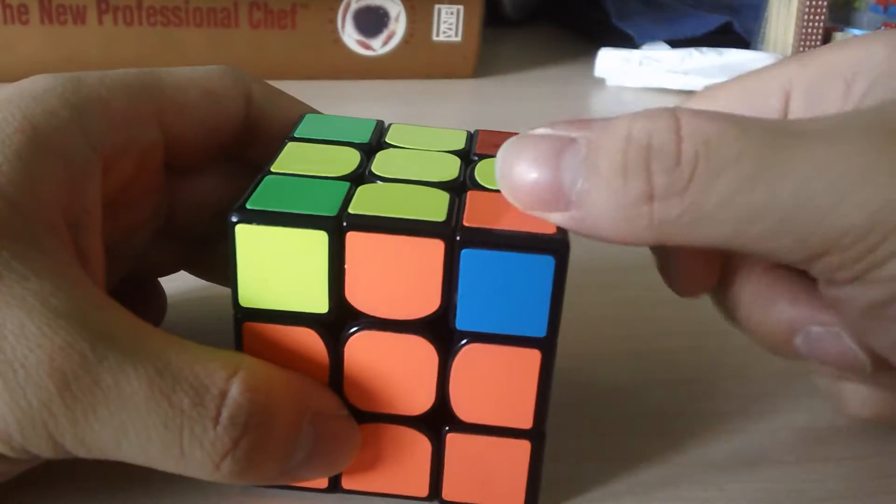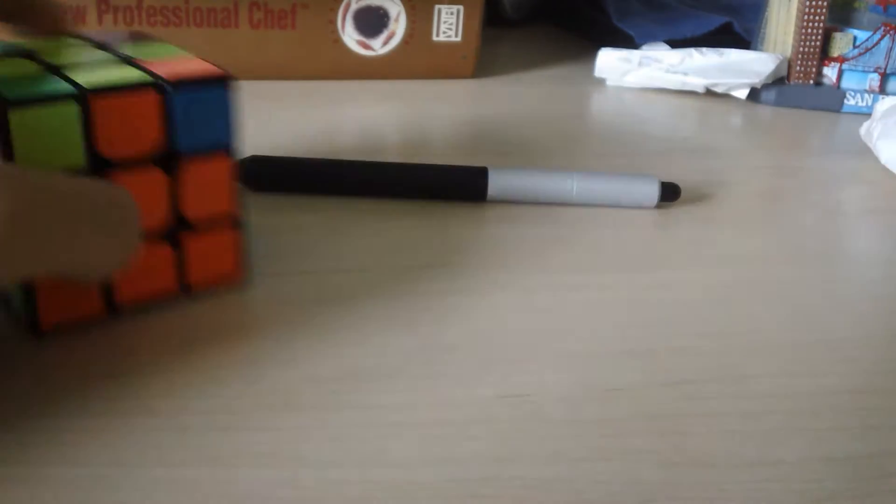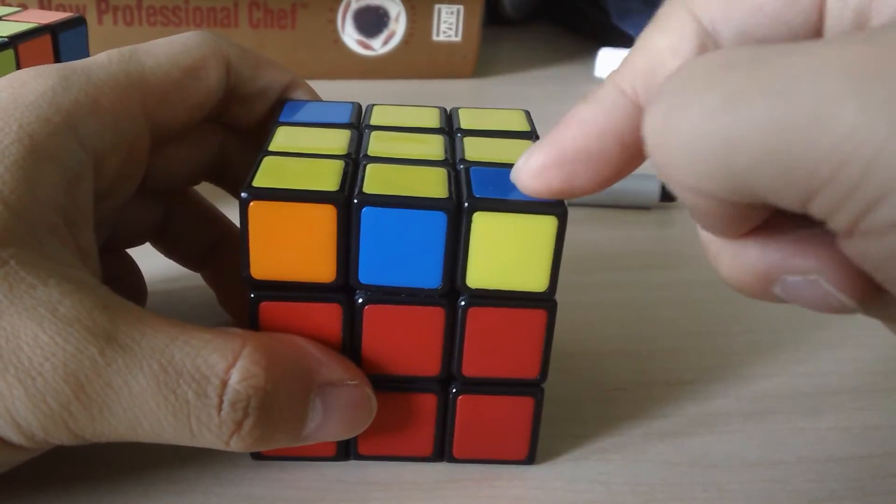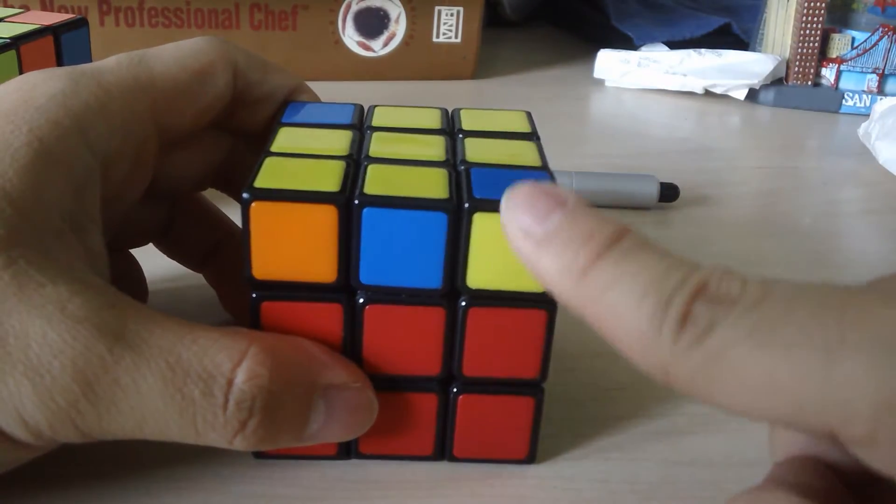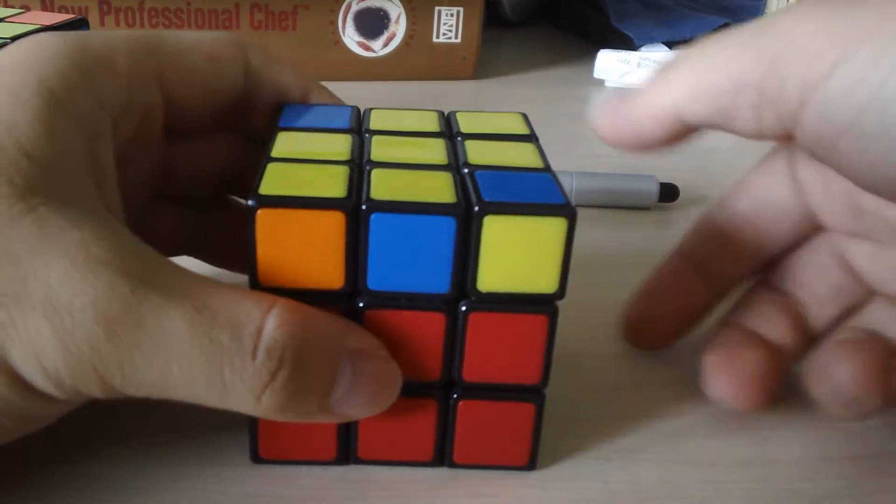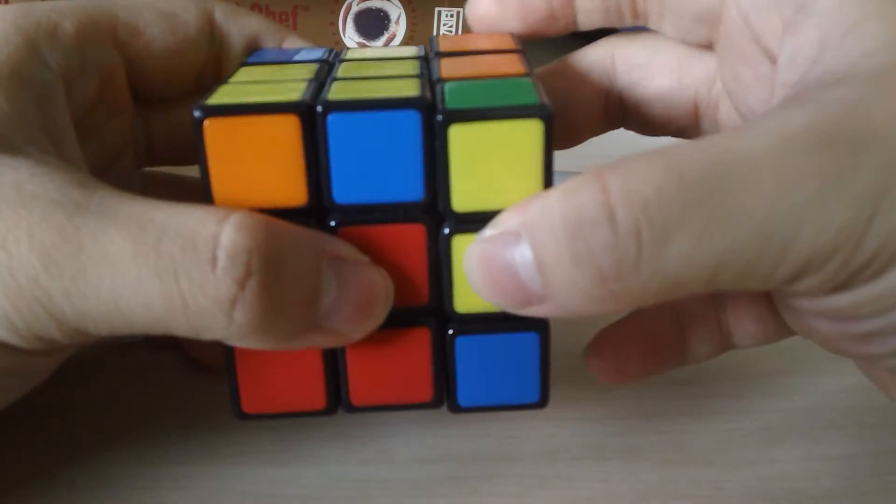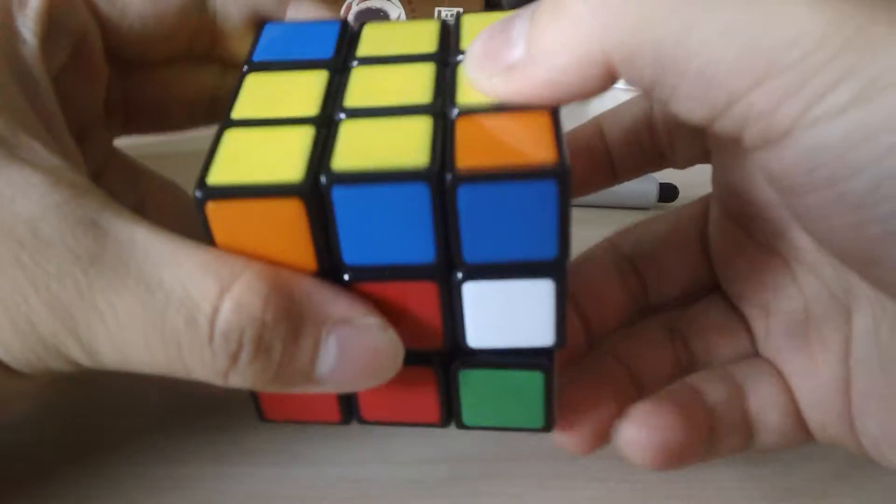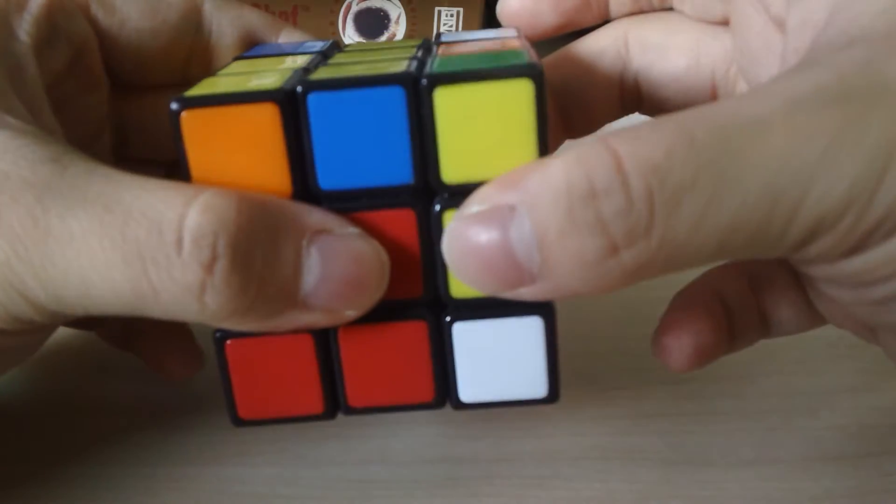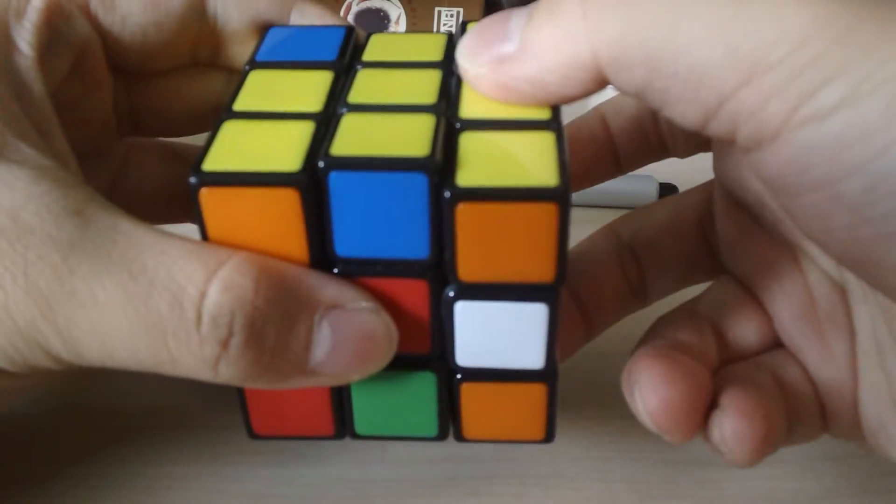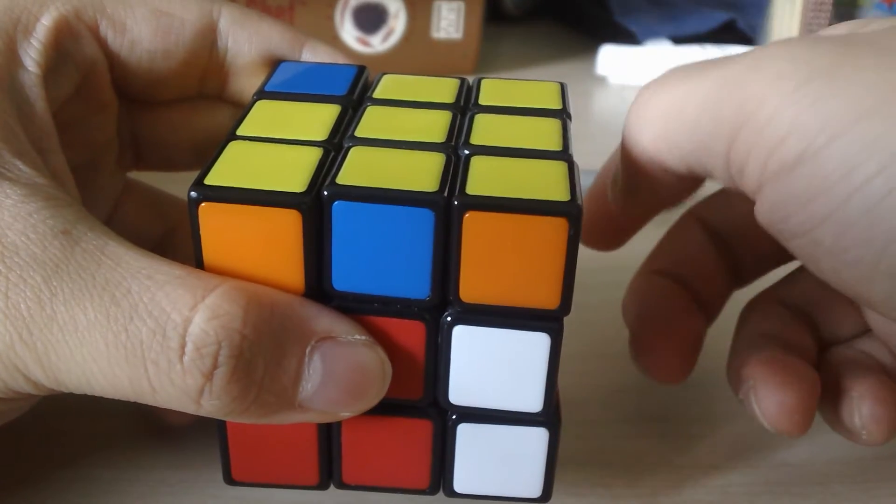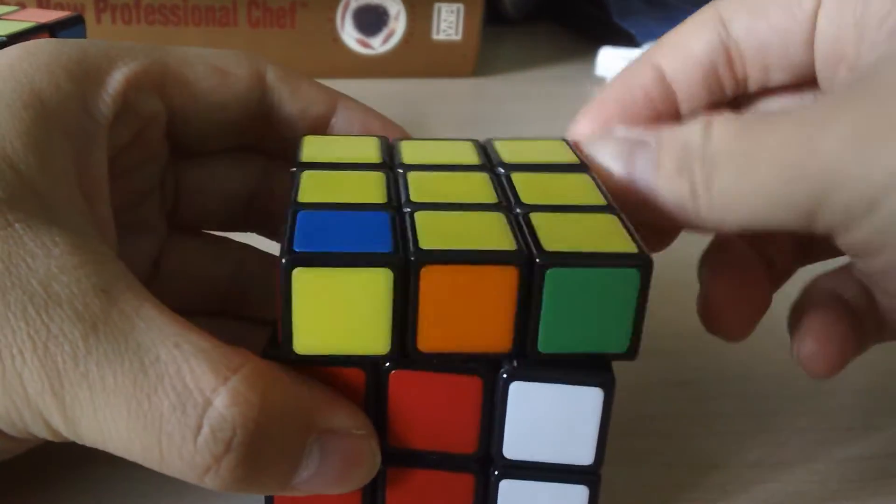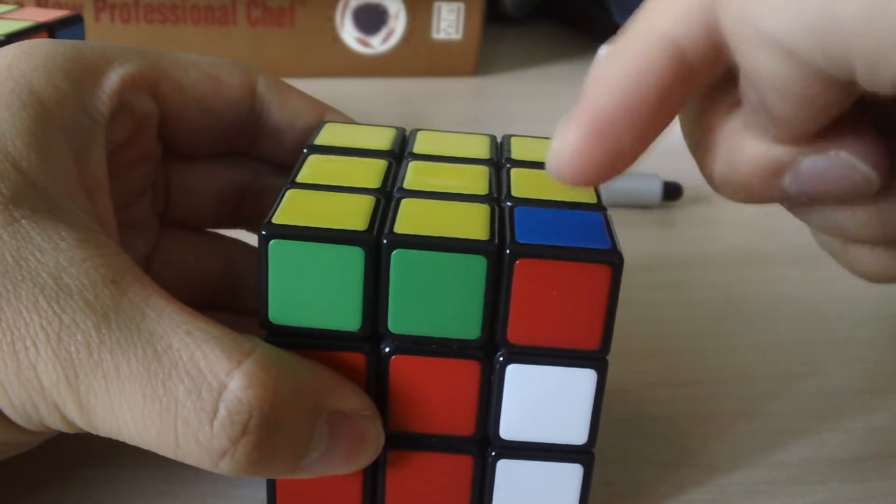And this is how you do it. So, as before, we make sure that the piece that needs to be flipped is in the right column. And we just apply the algorithm. So right, over, up, over. And we just keep doing that. So last one, up, over. Now what's important for this step is that you don't turn the cube, but rather just turn the top layer until the next piece is in place.